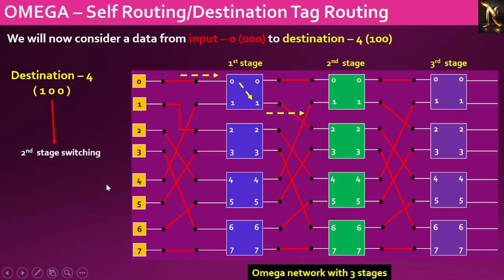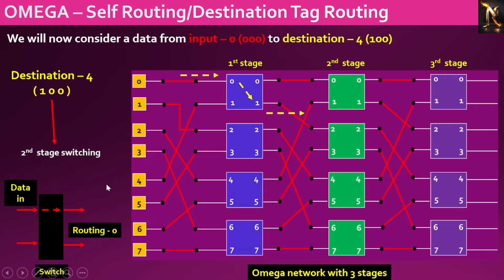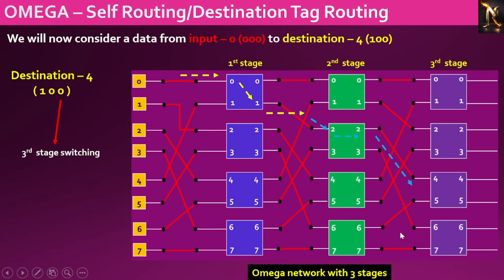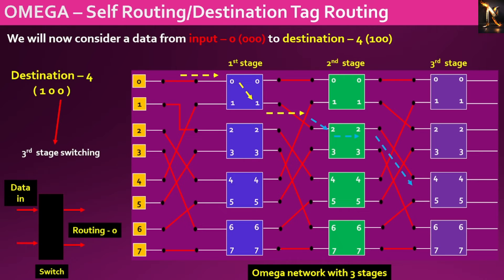Focusing on the middle bit of the destination address 100, this bit being 0 dictates the switching action for the second stage. Consequently, the data will be directed to the upper port of the second stage switch. For the final stage, the least significant bit of the destination address 100 being 0 dictates the switching action for the third stage, directing data to the upper port. As intended, the data packet originating from port 0 successfully reaches port 4, following the prescribed routing path through the stages of the omega network.